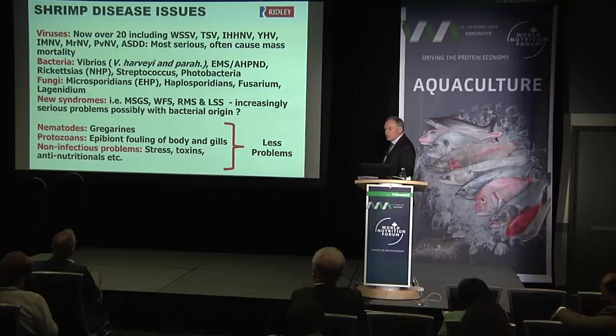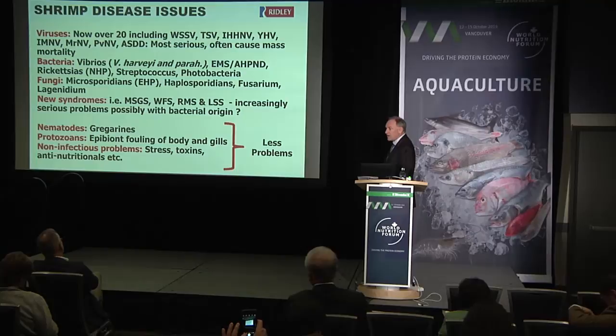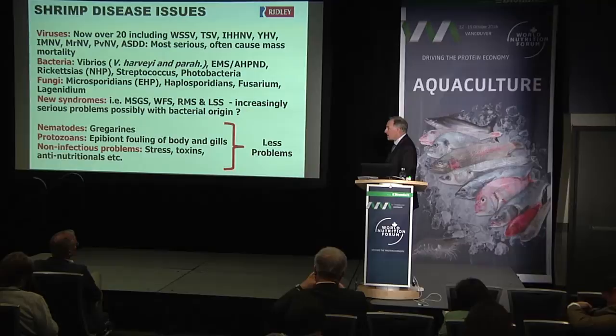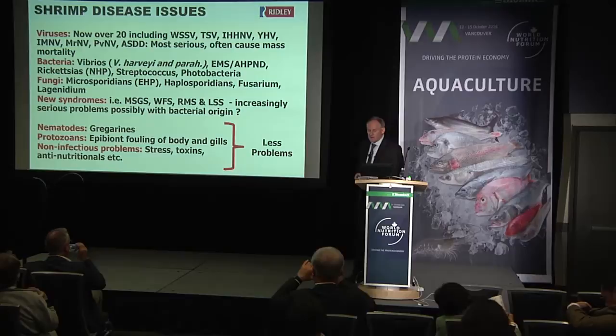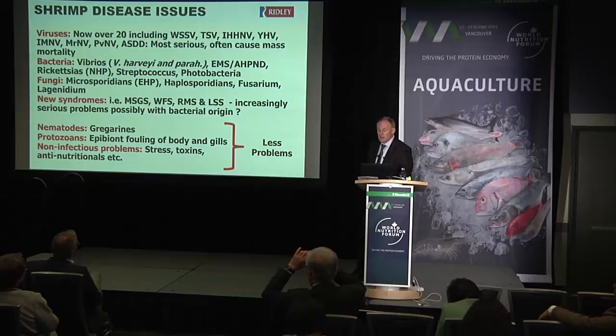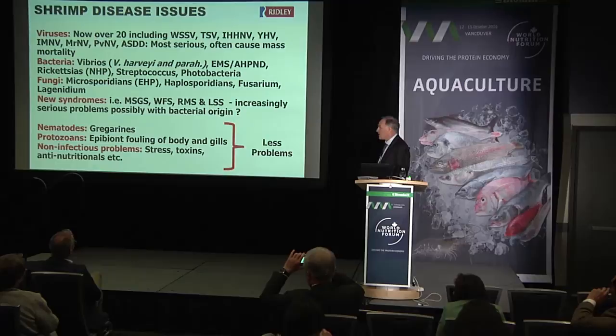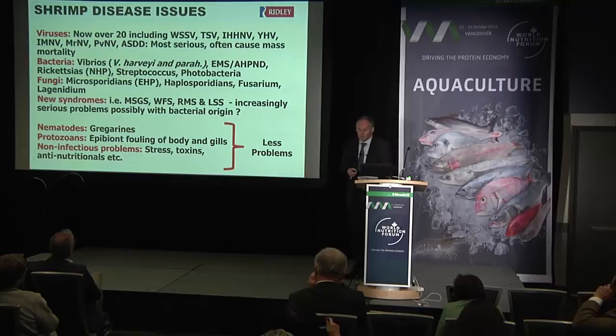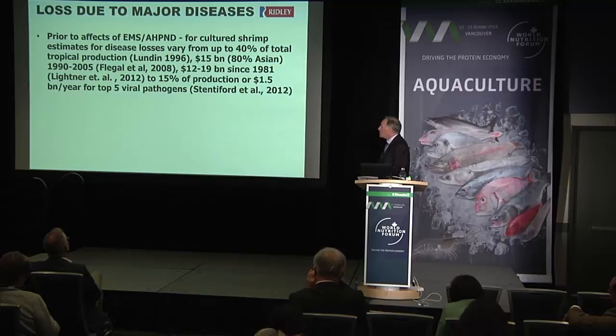In terms of shrimp diseases, traditionally the most important were viral diseases, and there are now more than 20 different viruses affecting penaeid shrimp. These often cause mass mortality in a very short period of time. More recently, bacterial-derived diseases like Vibrios causing EMS, and fungal problems like EHP microsporidians, and new syndromes we still don't fully understand, are having even more effect than the viruses. There are also less serious problems like nematodes, protozoans, and other non-infectious issues.